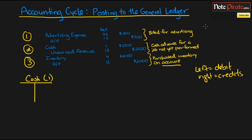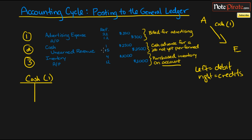The accounts are listed in this particular order because they're given reference numbers in the order of assets to equity — they go through all the assets, then all the liabilities, then all the equity accounts. The first asset account is cash, and the reason cash gets number one is because it is the most liquid asset. So we go cash, then receivables at number two, investments might be three, and so on.